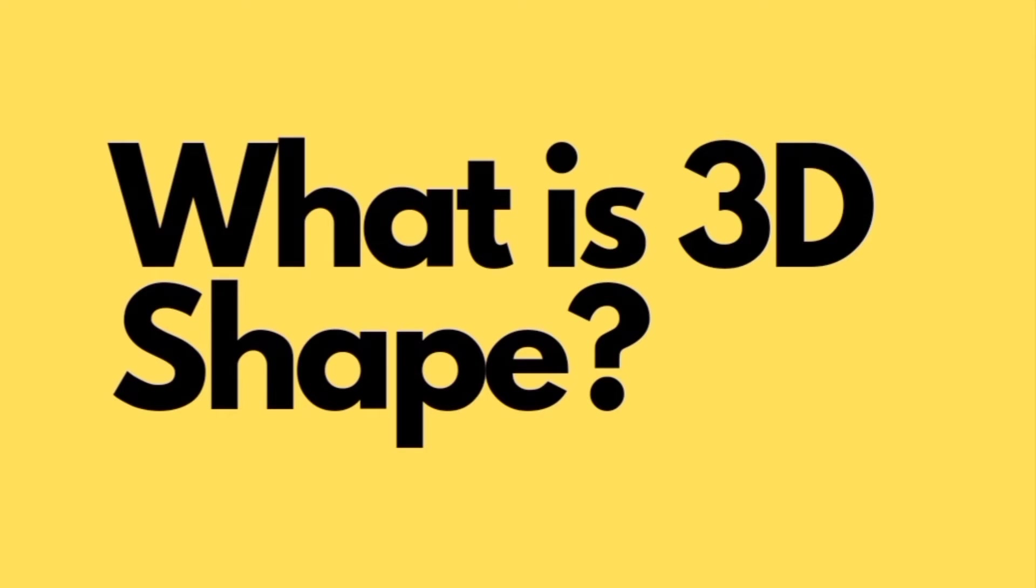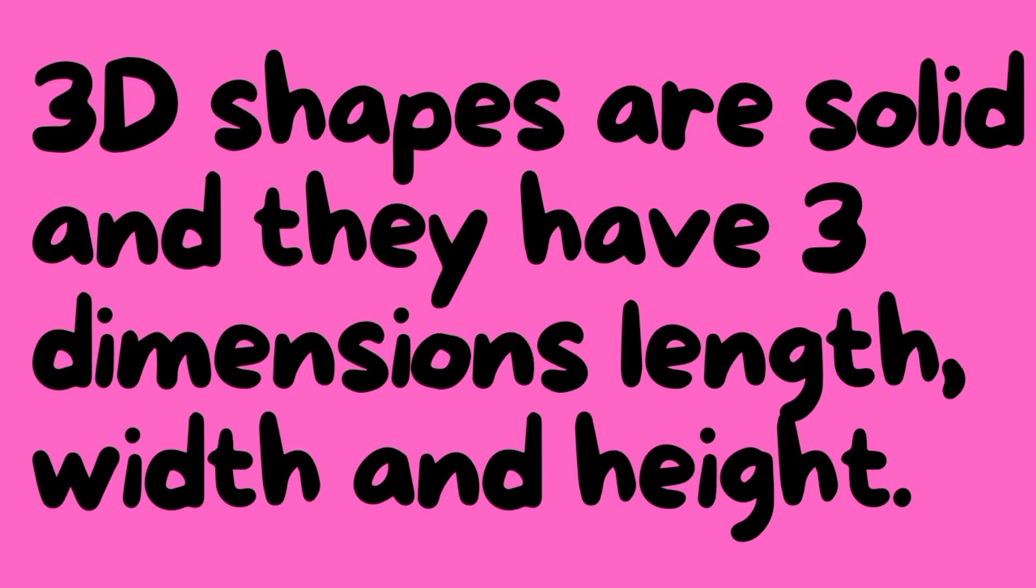Kids, do you know what is a 3D shape? 3D shapes are solid and they have three dimensions: length, width, and height. Let's look at some common 3D shapes and their properties.